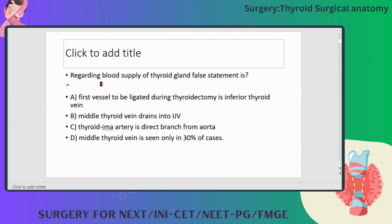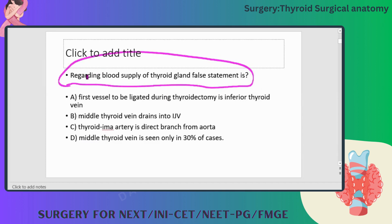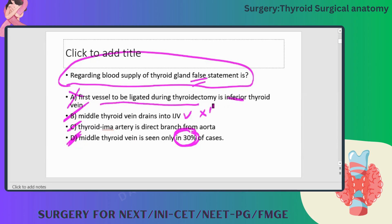Regarding blood supply of thyroid, identify the false statement. Middle thyroid vein drains into the internal jugular vein — that is correct. Thyroid ima is a direct branch of the aorta — yes, correct. Middle thyroid vein is seen only in 30% of cases — also correct. The false statement is that the first vessel to be ligated during thyroidectomy is the inferior thyroid vein; it is actually the middle thyroid vein, if present, that is ligated first.